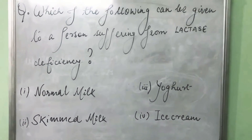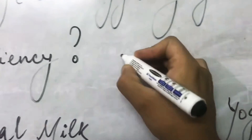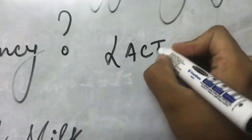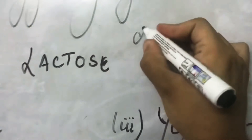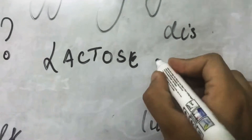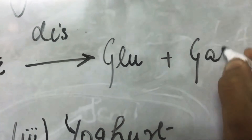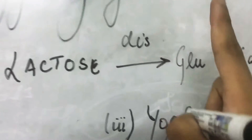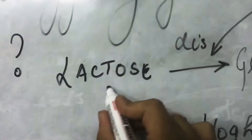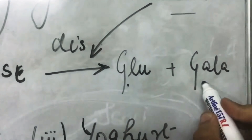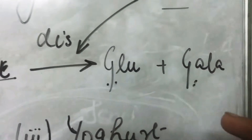Let's discuss what lactase deficiency is. As you all know, milk contains milk sugar known as lactose. Lactose is a disaccharide, and it is converted into its monomeric forms — glucose and galactose — in the brush border epithelium of the intestine by the enzyme lactase. This glucose and galactose are then absorbed by the small intestine.